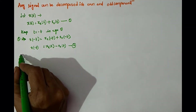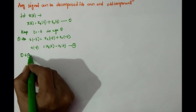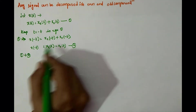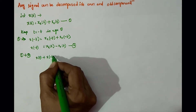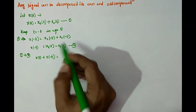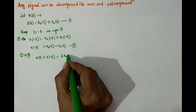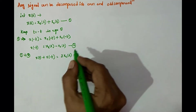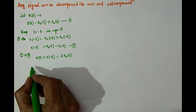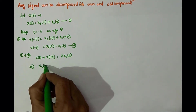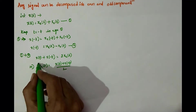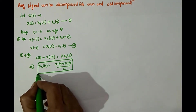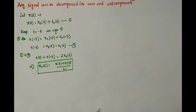Now do equation 1 plus equation 2. x of t plus x of minus t equals 2 times xe of t, since the odd components cancel. So the even component xe of t equals x of t plus x of minus t divided by 2. This is how the even component can be obtained.